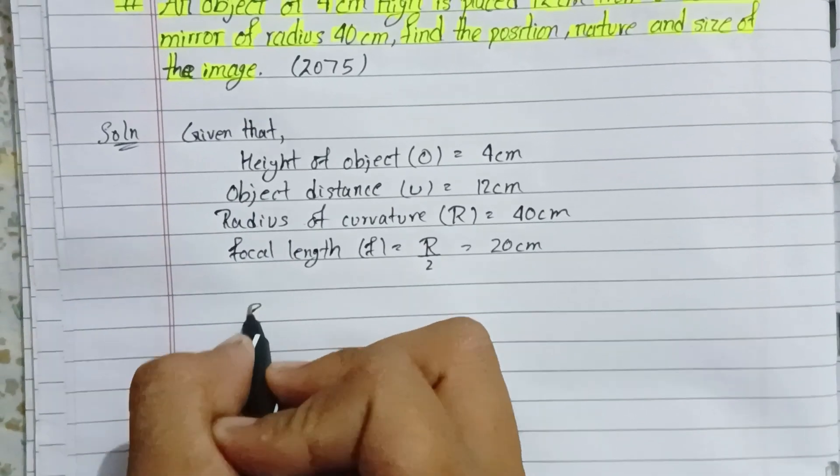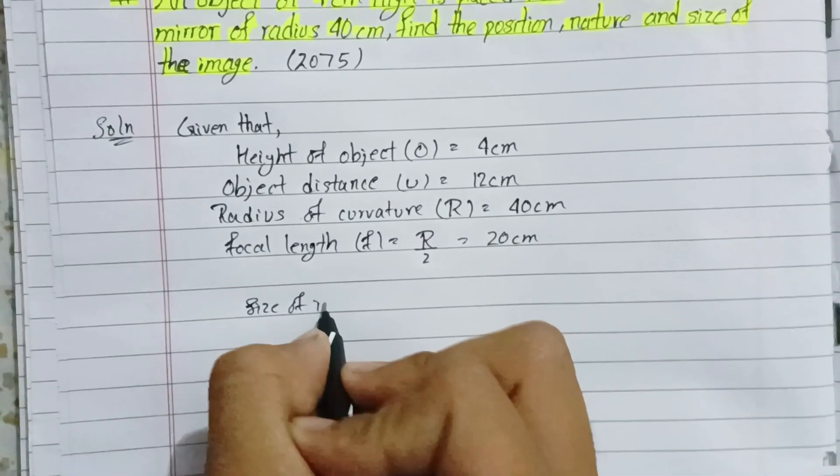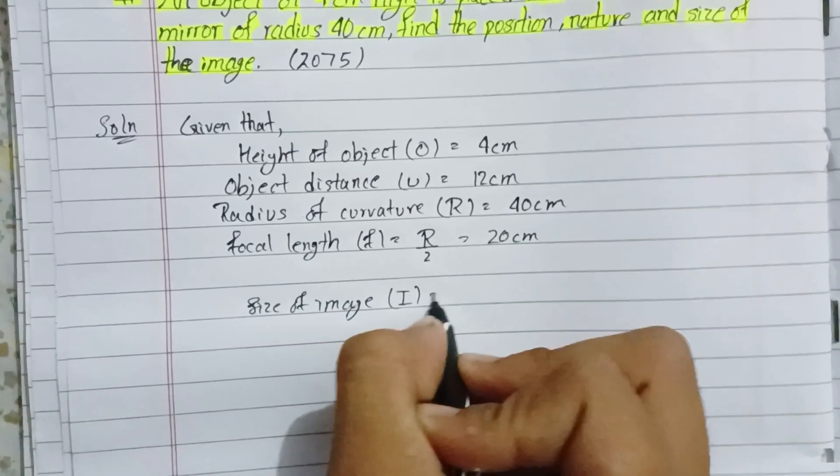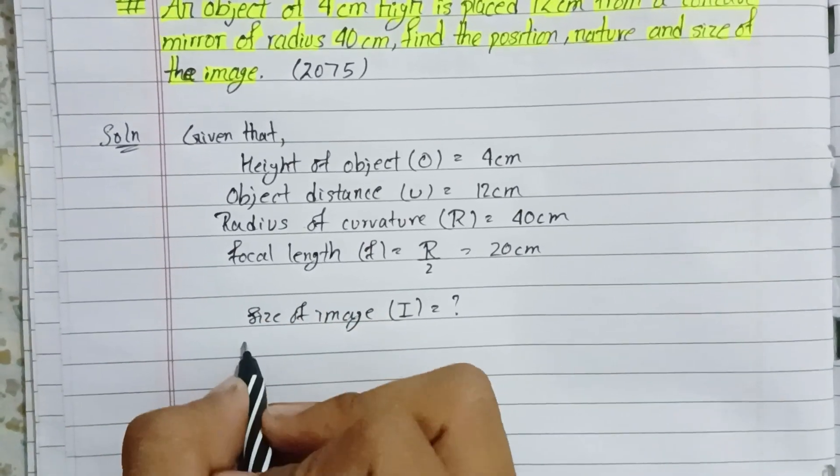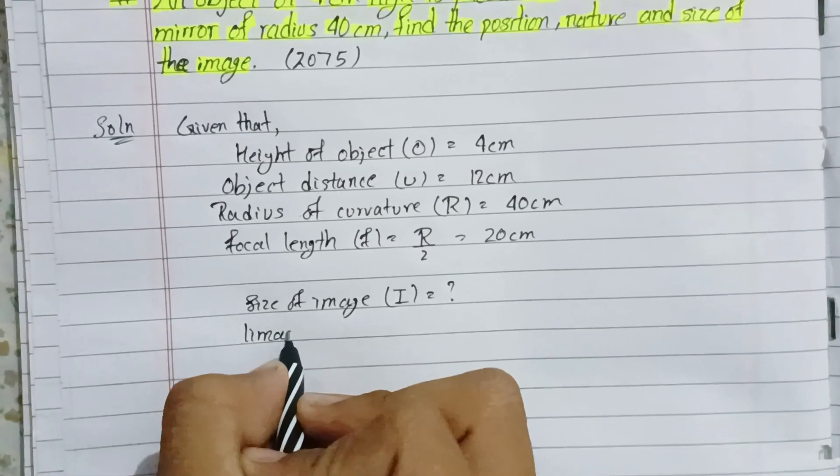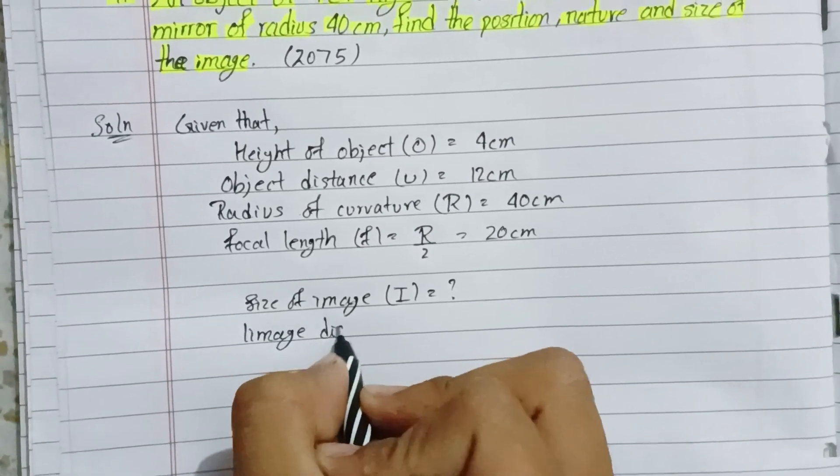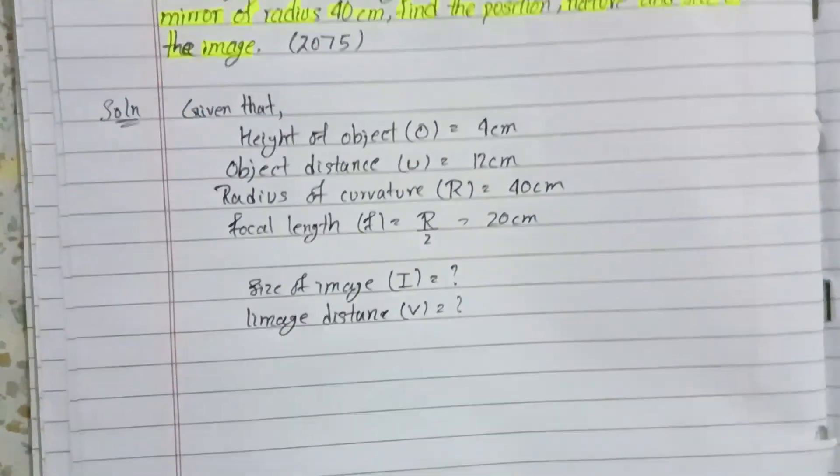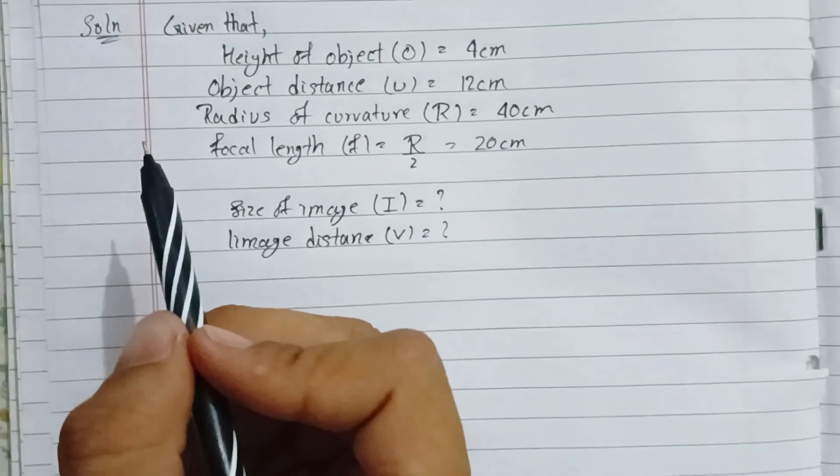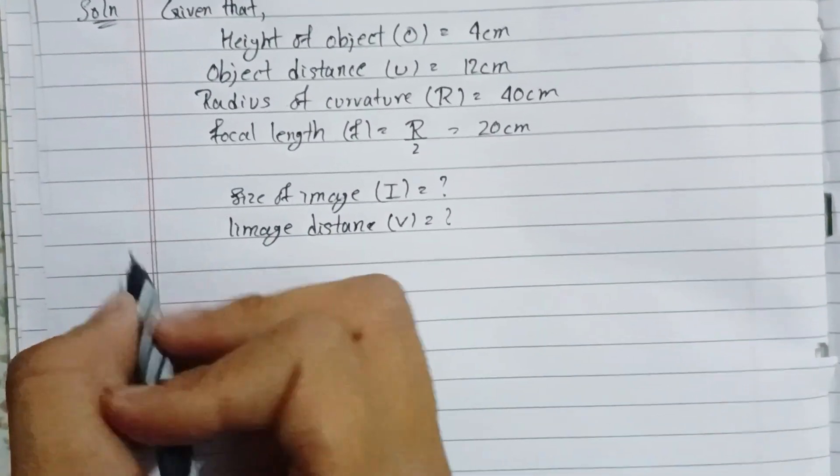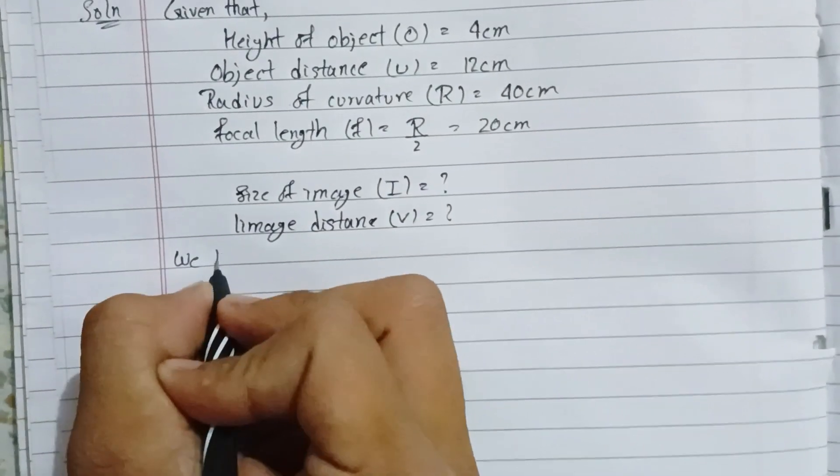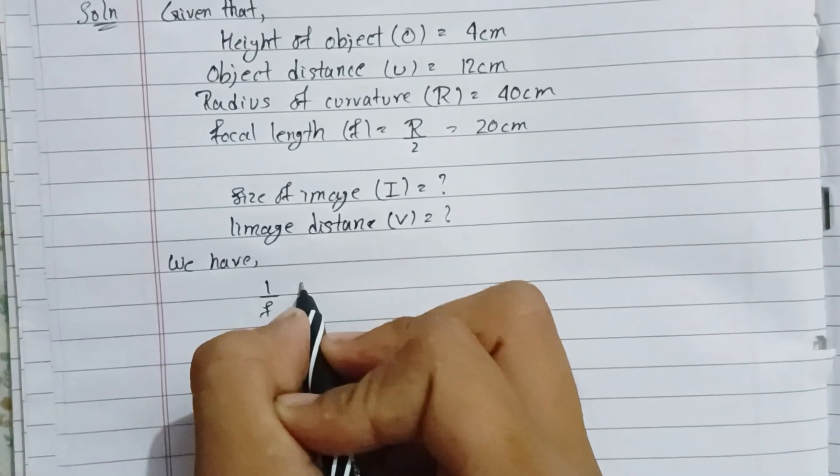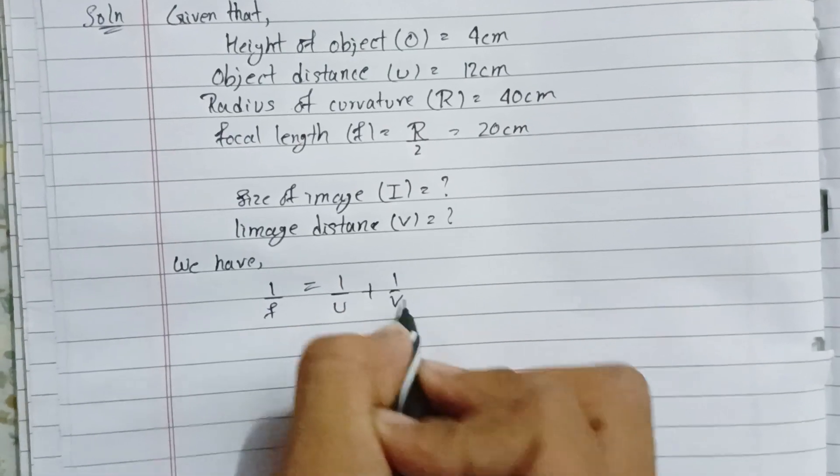Now for the image distance v, we use the mirror formula: 1 by f equals 1 by v plus 1 by u.